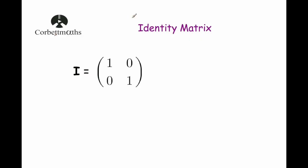Welcome to ScorpioMath's video on the identity matrix. In this video we're going to focus on the 2 by 2 identity matrix. The 2 by 2 identity matrix is [[1, 0], [0, 1]], and it's shown by an I. So I equals the identity matrix equals [[1, 0], [0, 1]]. Let's have a look at why it's interesting or why it's useful.